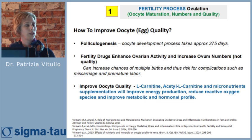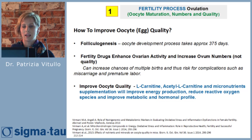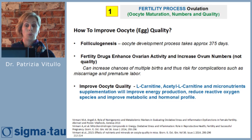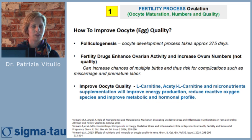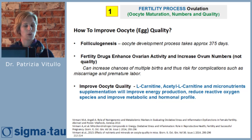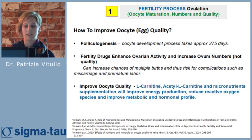We know that folliculogenesis takes a long time — the oocyte development process takes approximately 375 days. We now have fertility drugs that enhance ovarian activity, but we do not have a drug or therapy that improves the quality of the oocyte.